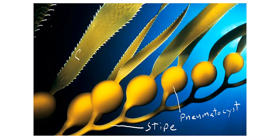Coming out of the pneumatocysts are what we call a blade. The blade is what appears to look like leaves, but even though they're not leaves, we call them blades. The stipe, the pneumatocysts, and the blades all together — we call that a thallus. The thallus is the body of kelp or seaweed.